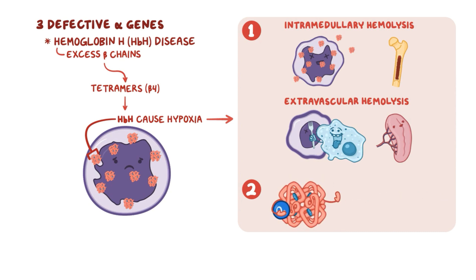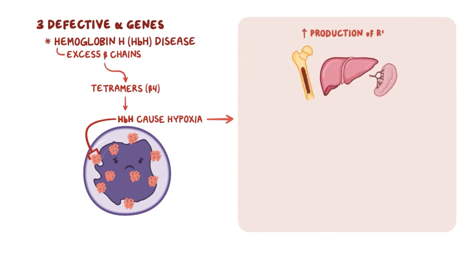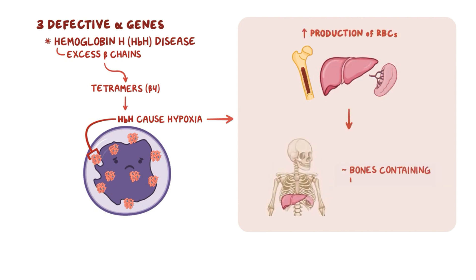A consequence of hypoxia is that it signals the bone marrow, as well as extra-medullary tissues like the liver and spleen, to increase production of red blood cells. This can cause the bones that contain bone marrow, as well as the liver and the spleen, to enlarge.